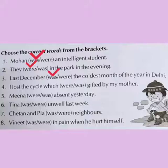Next: I lost the cycle which — were or was — gifted by my mother. Here we need to use the verb for cycle. Cycle is a singular subject. Which was gifted by my mother. Next: Mina — were or was — absent yesterday. The subject is Mina, which is singular. So here we will use was. Mina was absent yesterday.